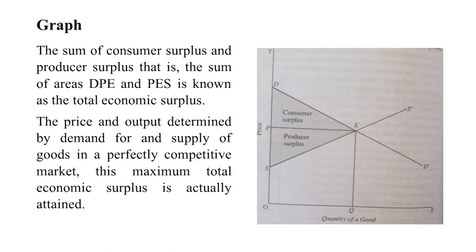We can explain this with the help of a graph. The sum of consumer surplus and producer surplus — the sum of areas D-P-E-P-S — shown as the shaded area on screen, is the total economic surplus. The price and output are determined by the demand for and supply of goods in a perfectly competitive market, and this maximum total economic surplus is actually attained.